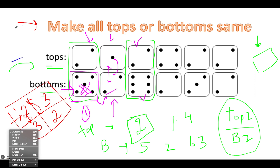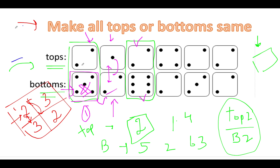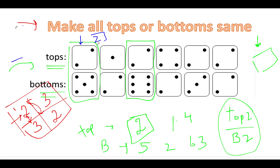Let's look at the other case. Now our target value is 2. Either we can make all tops as 2 or all bottoms as 2. We will go one by one and try to achieve the target. Let's shoot for making all tops as 2. The current value at the first index happens to be 2 — straightforward, nothing to be done.